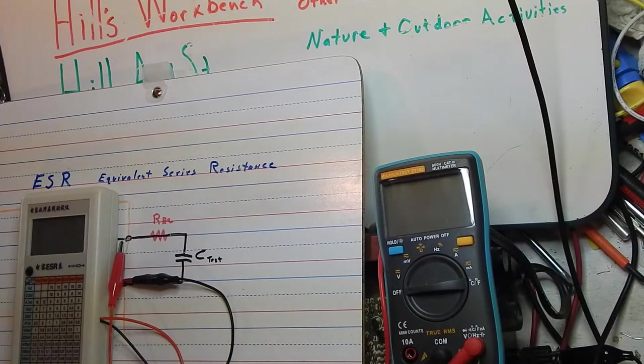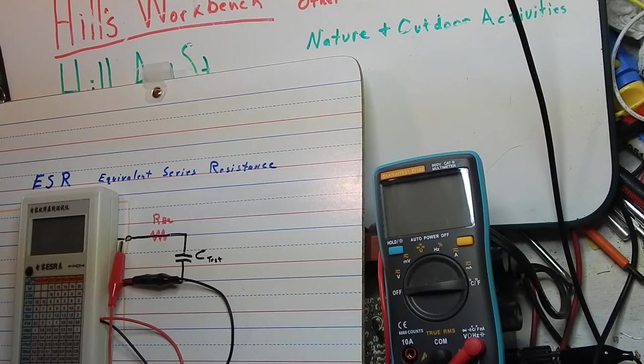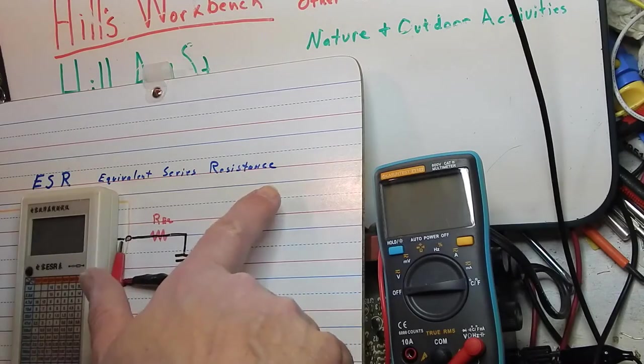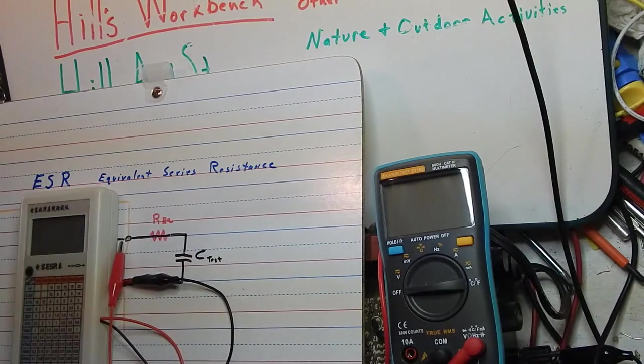There's arguments about features on meters and what's too much and what's a useful feature. I think a capacitance reading would be handy to have on a DVM myself. There's another way to test capacitors and that is to look at the equivalent series resistance, the ESR of the capacitor.